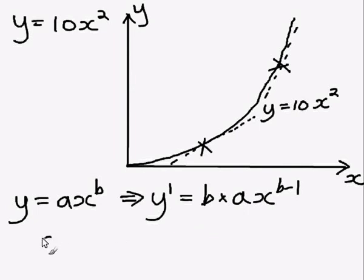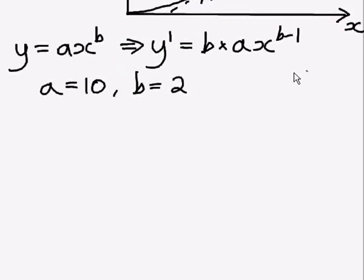So for our particular function, a equals 10, because that's the thing in front of the x, and b equals 2, because that's the power x is raised to. So what we're going to do is use this rule to work out what the derivative of y is in this case.